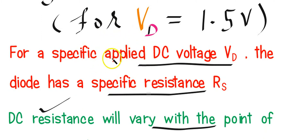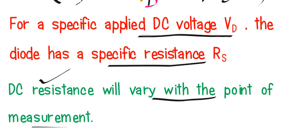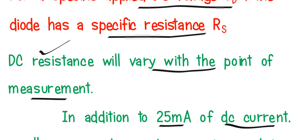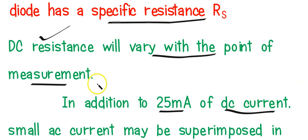So the static resistance, or DC resistance, is found for a particular DC voltage and will vary with the point on the curve.